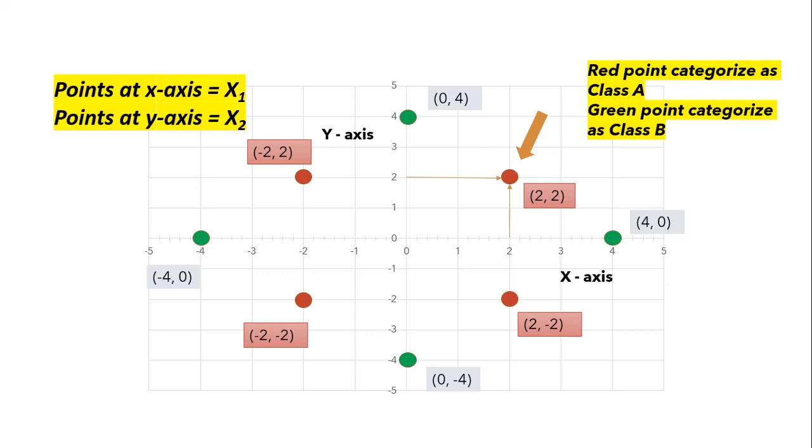As we have these vectors with us, we already know that we have to transform this data in higher dimension so that we can create separable hyperplane between these classes. We will find out a non-linear mapping function, that is phi, through which we can transform these data into new feature space, and thus we will be able to create separating hyperplane.